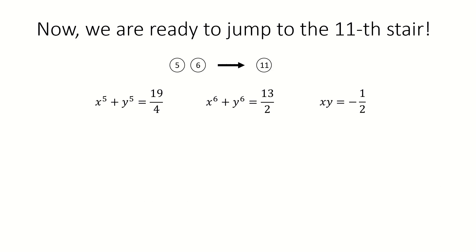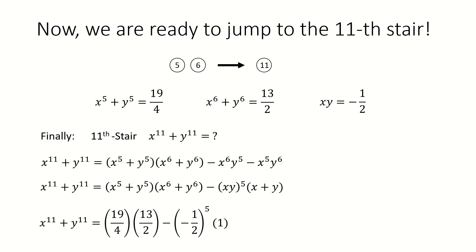For stair 11, I believe you already know how to solve it. We break down into the product of oval 5 and oval 6. Next we factor the cross term. Plug in numbers, we got stair 11. So we are done.